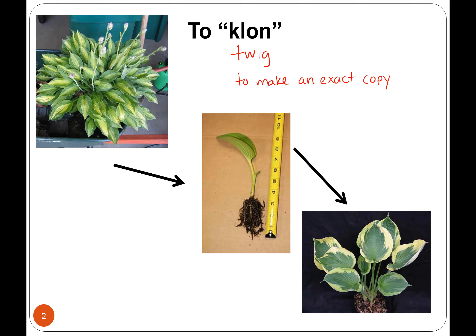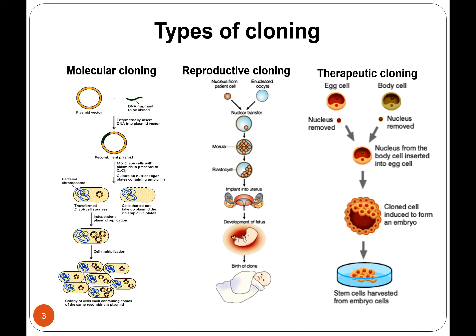Two of them we've already talked about. Molecular cloning is really our recombinant DNA that we talked about at the beginning of the semester. The whole idea is you're making a new recombinant piece of DNA — recombining DNA from different sources — and then when you put it into E. coli and the E. coli divides and divides, you have multiple identical copies of that plasmid. That's molecular cloning.